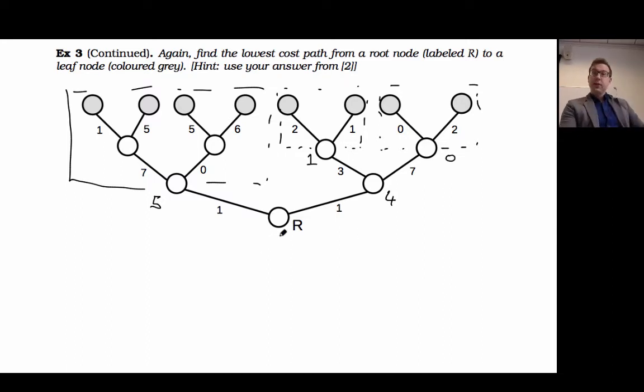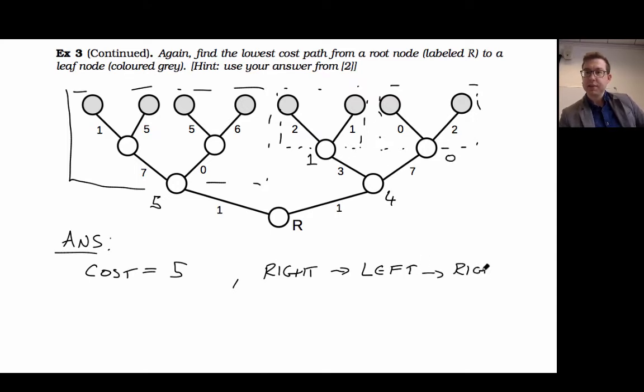Finally, notice I'm now at the root node. I can either go left and get one plus five or I can go right and get one plus four. And so what should I do? Left or right? Right. Good. So the answer here is that we get a cost of five, one plus four. And we go right, then we go left, then we go right.